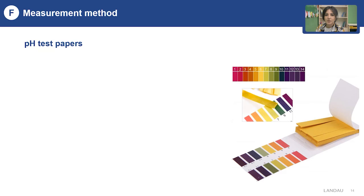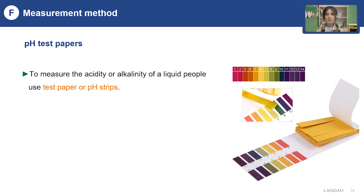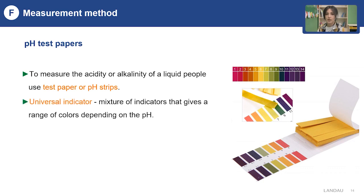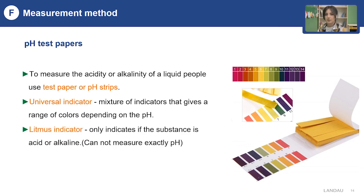Now let's learn some measurement methods to test acidity and alkalinity. One way is to use pH strips or pH papers. You add the pH strips to your solutions, get different colors, and match them with the pH scale to find the acidity or alkalinity. If you want to measure the exact pH value, you use universal indicator. But if you only want to find out whether a substance is acid or alkaline, you use litmus indicator, since litmus cannot measure the exact pH value.